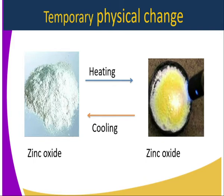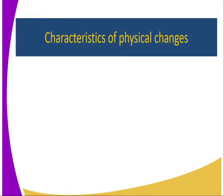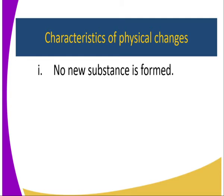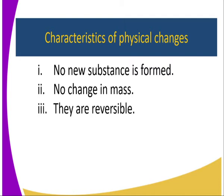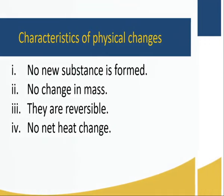These are known as physical changes. What are the characteristics of these physical changes? Number one, no new substance is formed — remember, zinc oxide when hot, zinc oxide when cold. Number two, no change in mass, because we didn't alter the chemical composition. Third, they are reversible — from hot to cold, same process. And fourth, no net heat change; the process is neither exothermic nor endothermic.